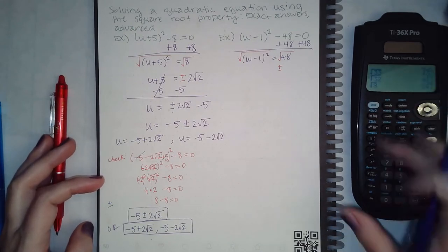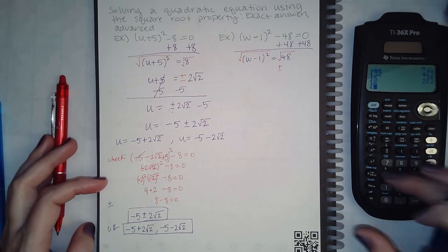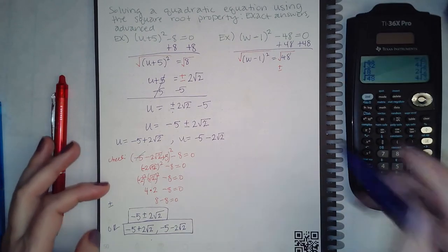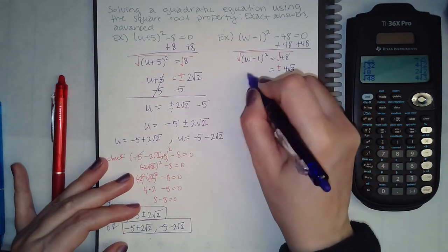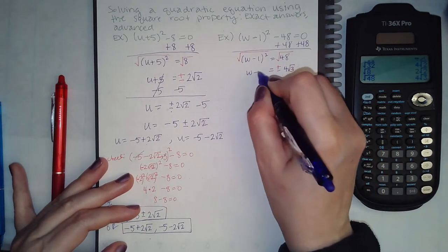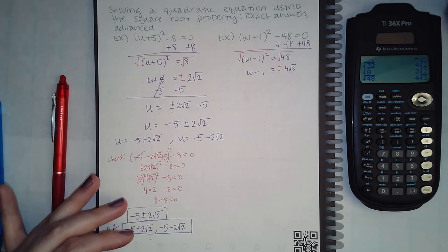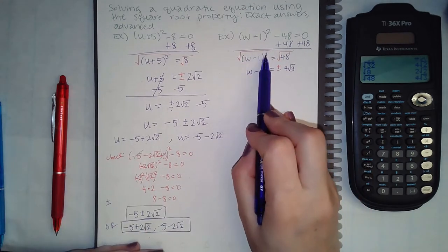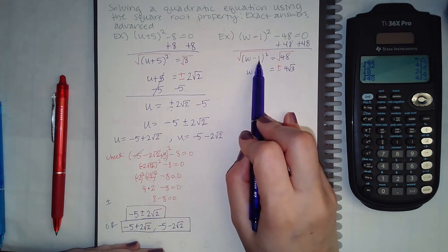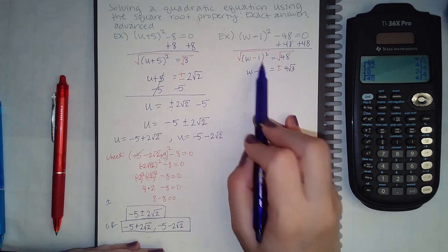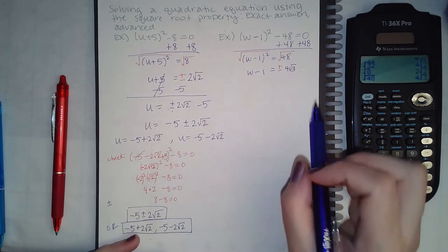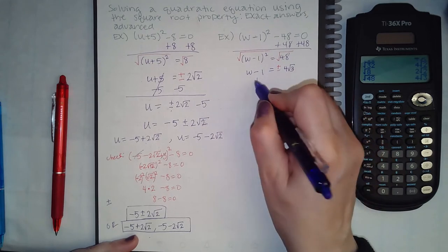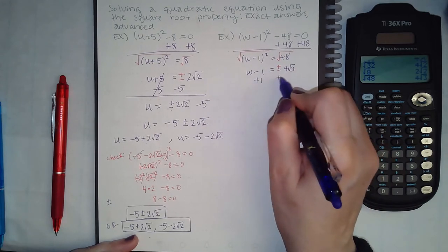The square root of 48 is actually equal to 4 square root of 3. The square root and the exponent will cancel, leaving me with just w minus 1.